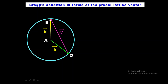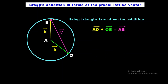By the triangle law of vector addition: AO + OB = AB. The direction of AO represents the incident x-ray wave vector k, and AB represents the diffracted x-ray wave vector k'. OB is the reciprocal lattice vector G. Therefore: k + G = k'.